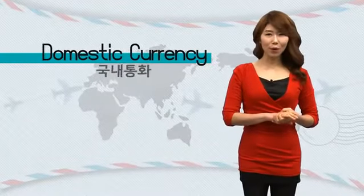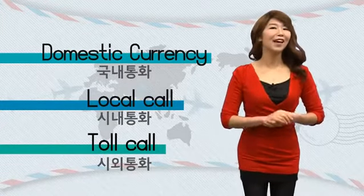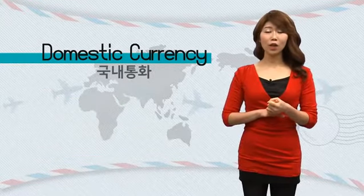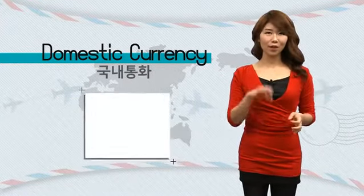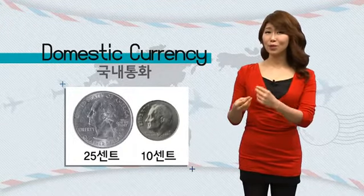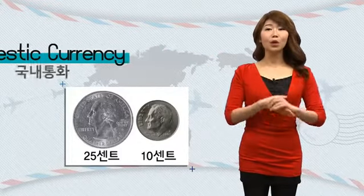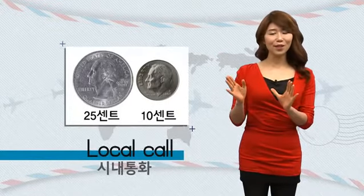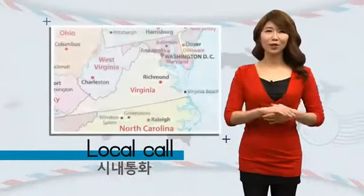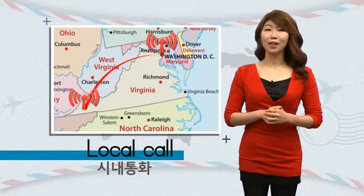공중전화를 활용할 수 있는 방법 알고 계신다면 매우 안전하고 유용한 여행이 될 수 있겠죠! 먼저 국내 통화를 활용하는 방법! 그리고 시외 통화를 활용하는 방법까지 꼼꼼하게 안전 여행을 위해서 짚어드리도록 할 테니까요, 잘 들어보세요! 우선 국내 통화를 하기 위해서는 25센트짜리 동전, 쿼터를 준비하셔야 되겠습니다! 요즘은 35센트로 슬금슬금 공중전화 요금이 올라가고 있다는 거, 로컬 요금 같은 경우에는 35센트에서 무제한으로 활용할 수 있습니다.